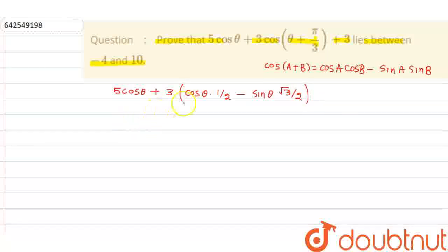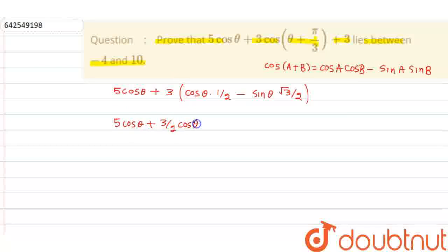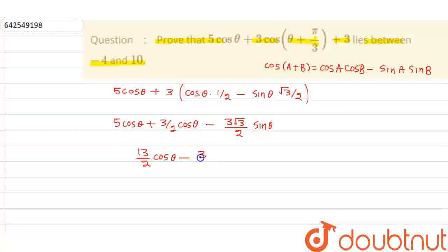So this becomes 5cosθ plus 3 times (1/2·cosθ − √3/2·sinθ), which gives 5cosθ + (3/2)cosθ − (3√3/2)sinθ. Adding up the cosθ terms, this becomes (13/2)cosθ − (3√3/2)sinθ.